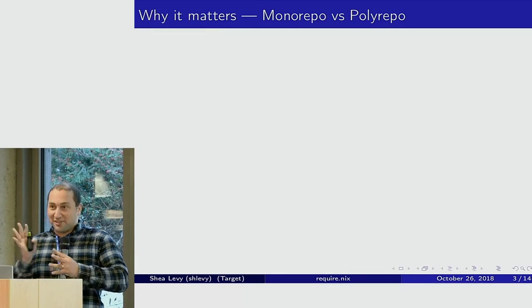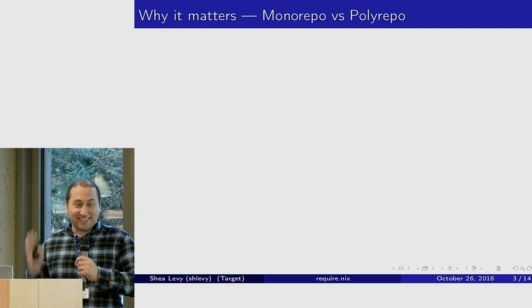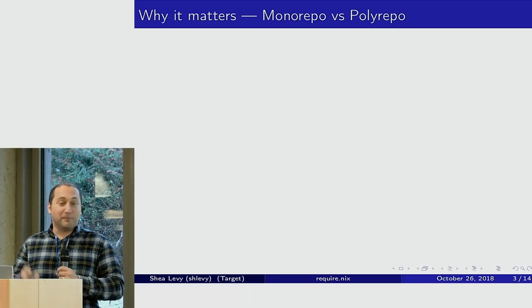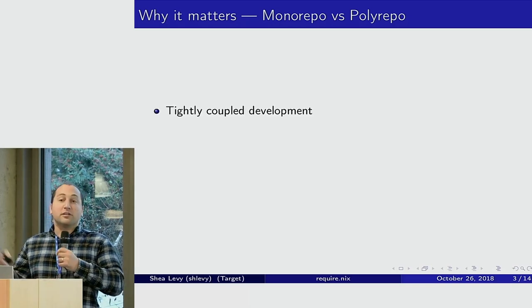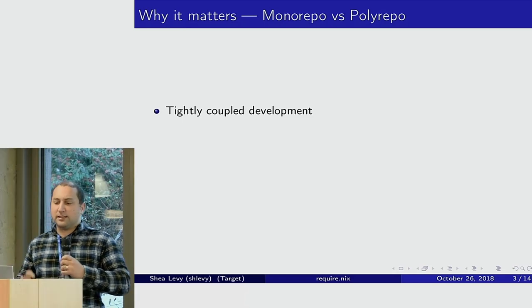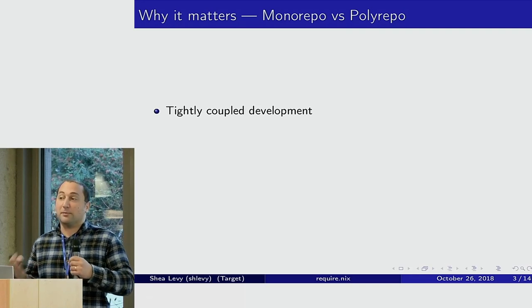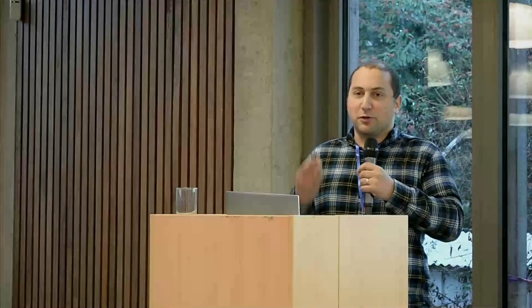Why is this a problem? This is about to get political — I'm going to take a stand on monorepo versus polyrepo for our context. Our current workflow, especially Nix packages, leads to very tightly coupled development. Everything within Nix packages is updated atomically, which makes sense because you want everything to work together. But it means the interfaces between components are very blurred. If you make a stdenv change, you can just change all the packages that break in one commit and never have to think about whether that was a good interface, or whether the change will be usable for external users.